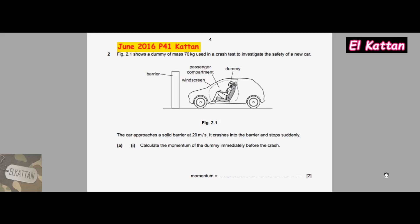For part A(i), calculate the momentum of the dummy immediately before the crash. For calculating momentum, symboled by the letter P, equals mass times velocity. So the mass is 70 kg times the velocity which is 20 m/s equals 1400 kg·m/s.